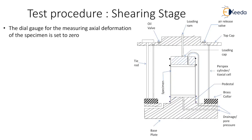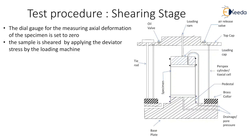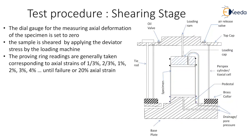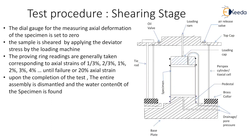The dial gauge for measuring axial deformation of the specimen is set to zero. The sample is sheared by applying the deviator stress by the loading machine. Proving ring readings are generally taken corresponding to axial strains of one-third percent, two-thirds percent, one percent, two percent, three percent, four percent and so on, until failure or twenty percent axial strain. Upon completion of the test the entire assembly is dismantled and the water content of the specimen is found.